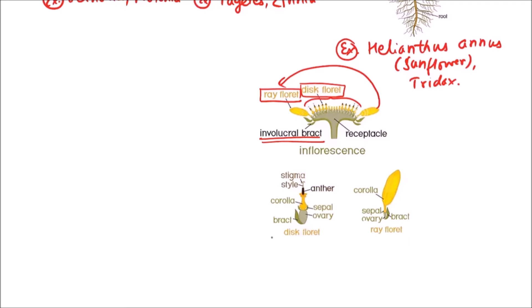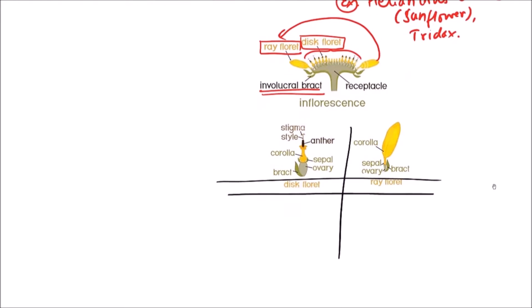Now we will differentiate the disc florets and the ray florets. These are the structures of disc florets and the ray florets. First point is the location. Disc florets are central while the ray florets are peripheral.